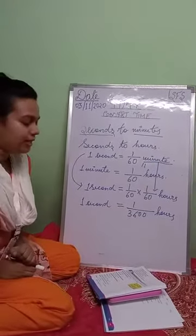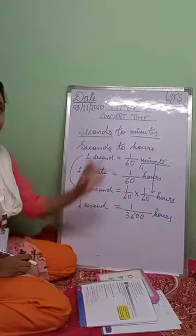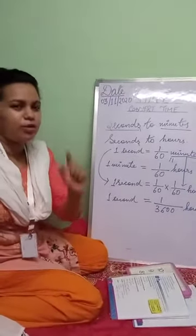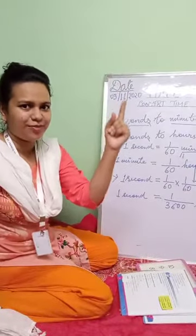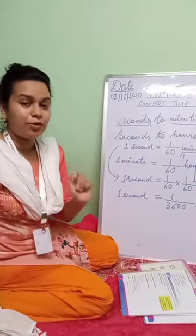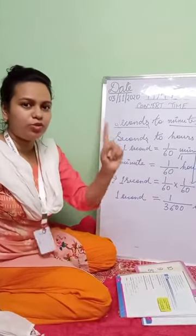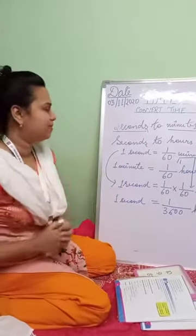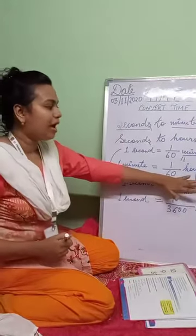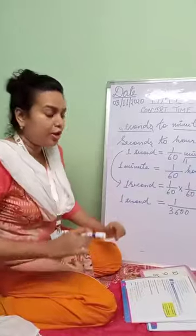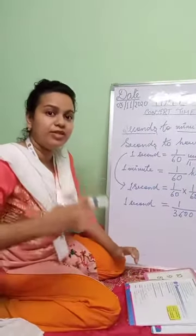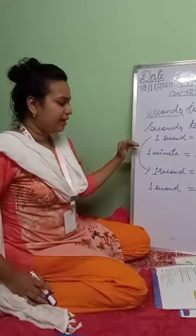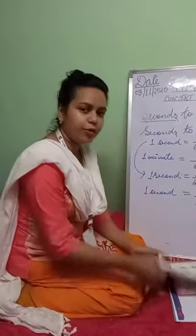Today we have learned how to convert a smaller unit of time to a larger unit of time. Second is smaller than a minute — one second is over in a jiffy, while one minute requires counting sixty seconds. For one hour, you have to count sixty into sixty, that is three thousand six hundred seconds. I hope that is clear. Let us do a few problems.